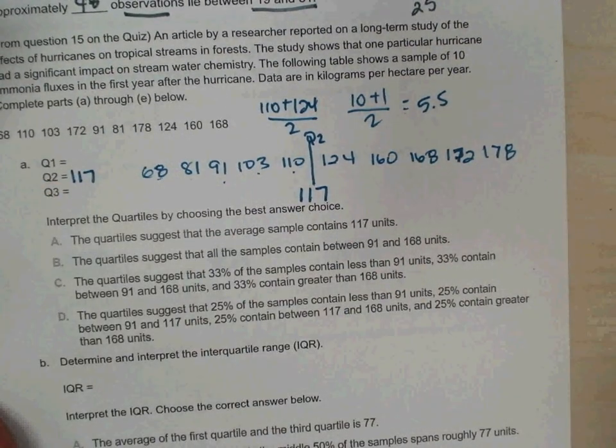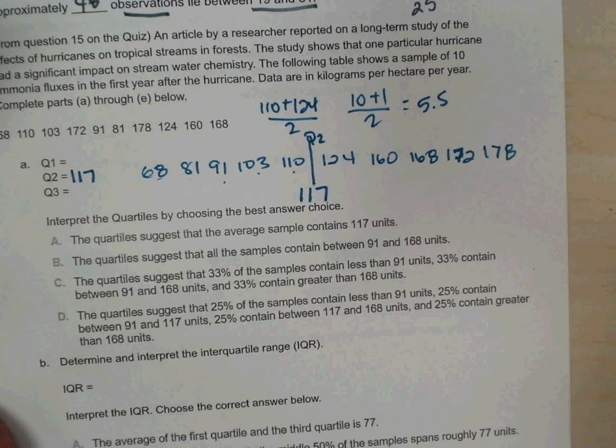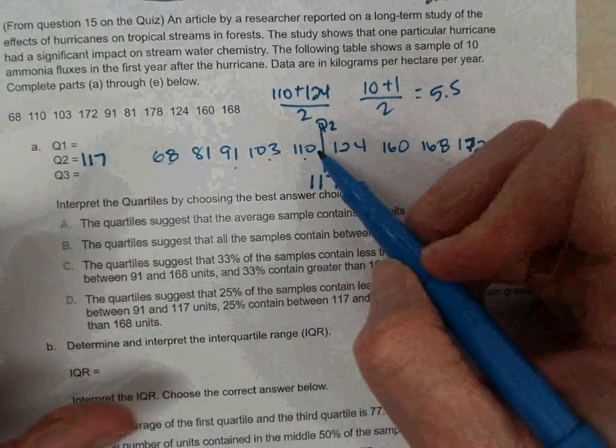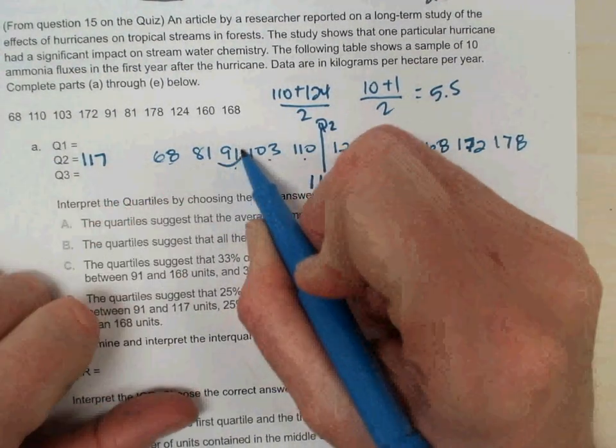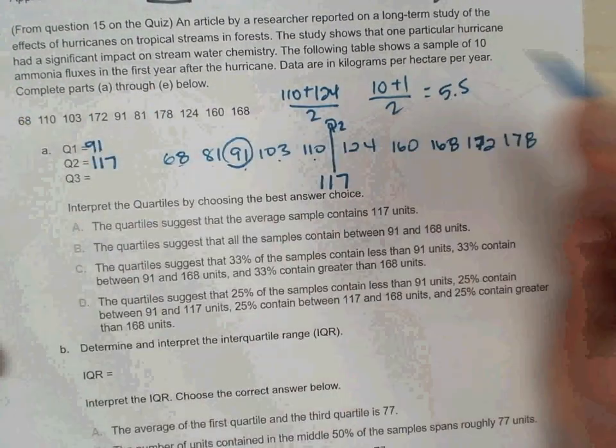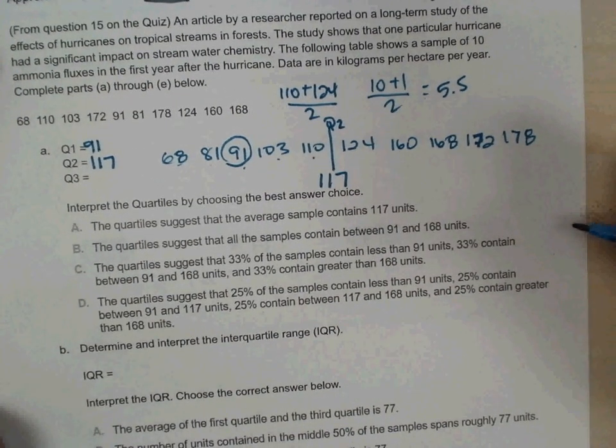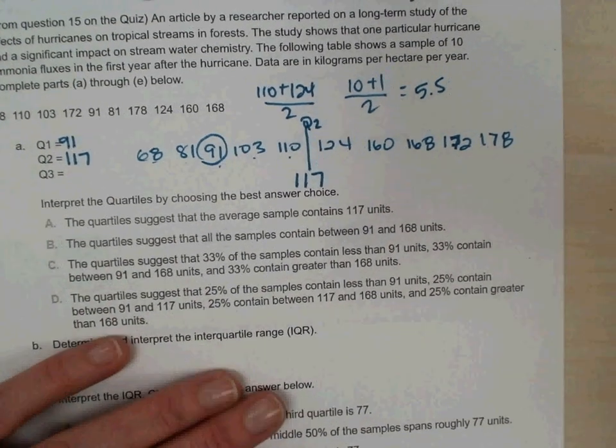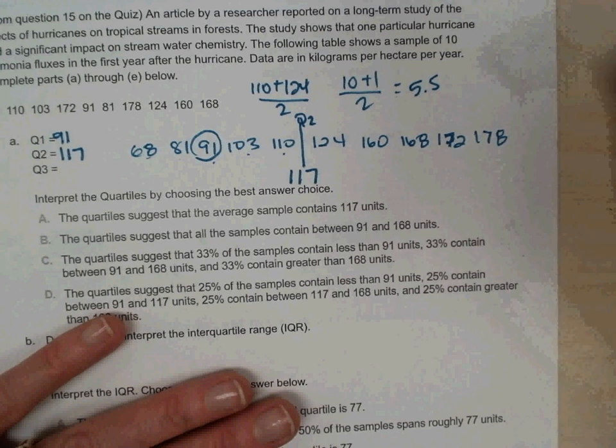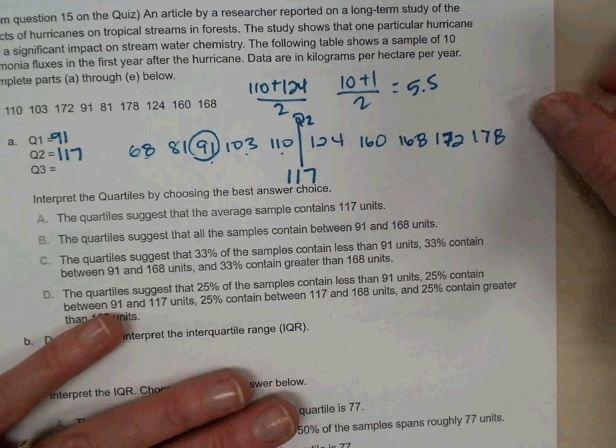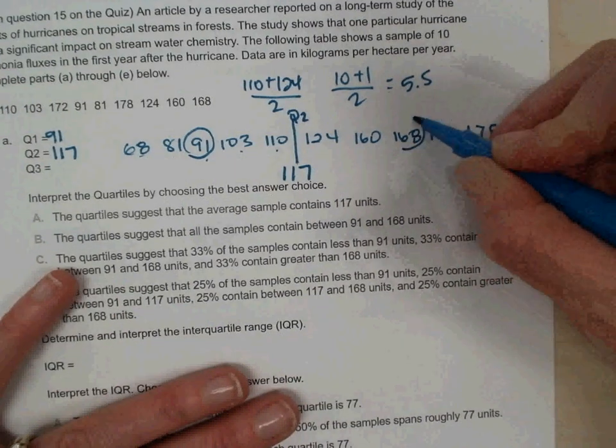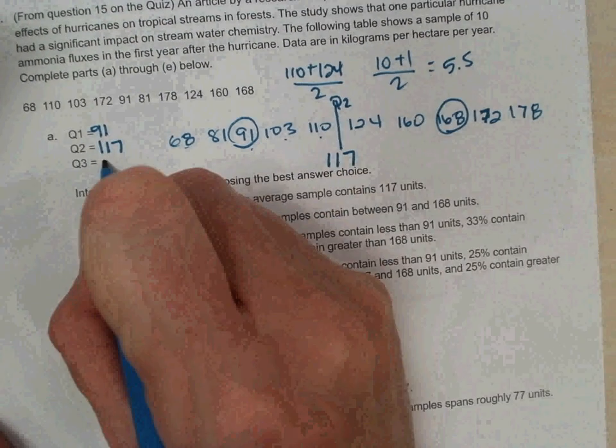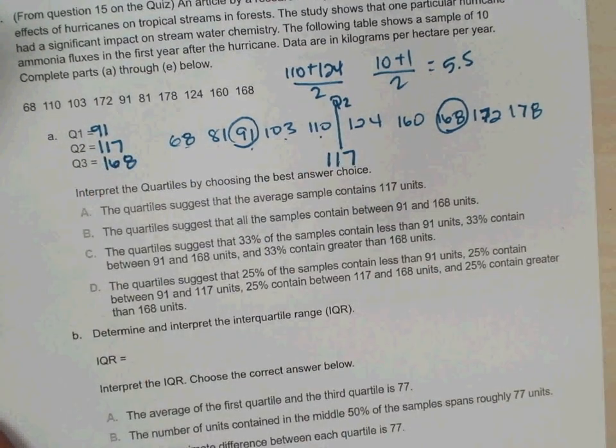And then how do we find Q1? I simply look left of the median and find my middle number, which is 91. Great. That works, too. 91. And then Q3. How did you find Q3, Alyssa? It is right there in the middle, so it's the median of the upper half of the data set. 168. Done.